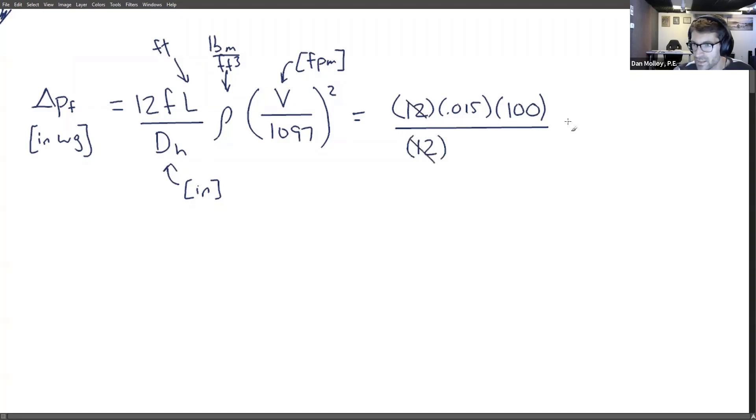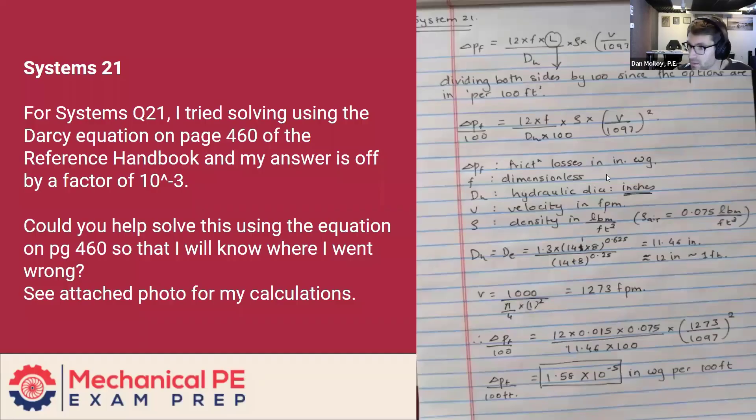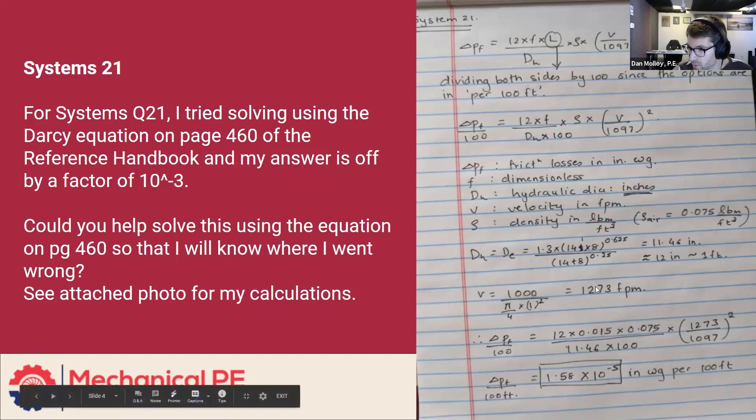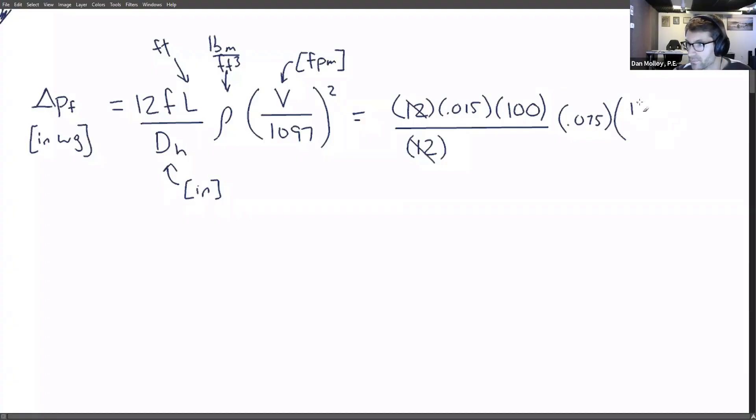Now the density, which for air is typically about 0.075. And I believe you made the same assumption for that as well. And then for the velocity, you would work that out to be 1273 feet per minute. And I agree. And that's divided by 1097. And that quantity has to be squared.